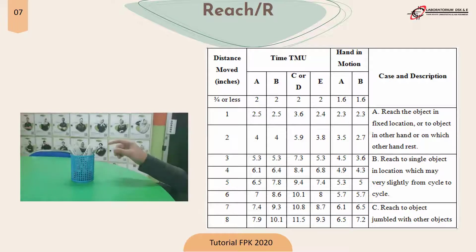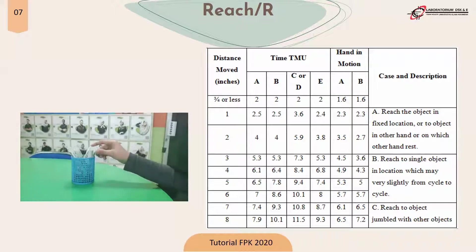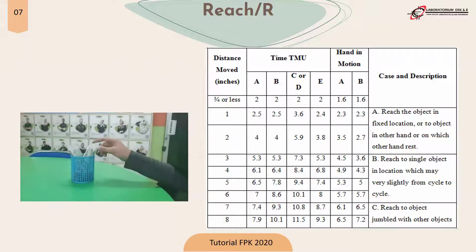In the reach table there are four cases. Case A is about an object whose location is already fixed. Case B is where the location changes but the operator can estimate the distance because they are used to doing it. Case C is for mixed objects where there is a select process. Case D is to reach a small object requiring tools such as tweezers to make it easier to reach. Case E is for moving objects where the operator is not used to the distance. In this tutorial, we only use type 1 movements.